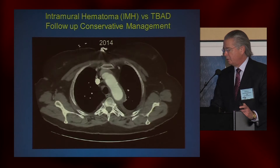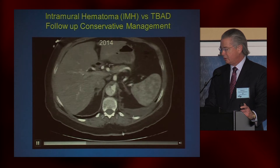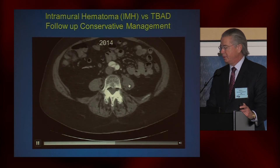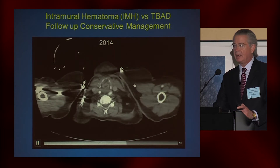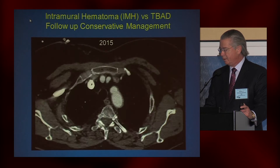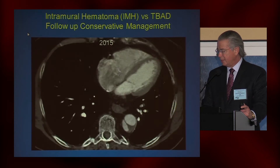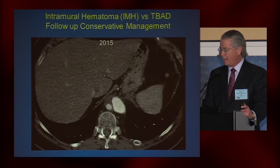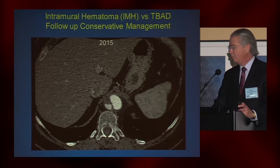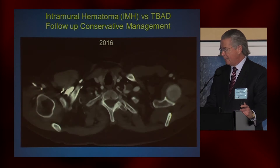Here's a patient of mine seen in 2014 who presented with what appeared to be an intramural hematoma with some blood pooling and what appeared to be dissection in the lower abdomen. She was asymptomatic at presentation, so we decided to treat her conservatively. In 2015, the thoracic aorta was healed, she had some blood pools in the lower abdomen, and the dissection appeared to have converted into blood pools with intramural hematoma. The patient remained asymptomatic.